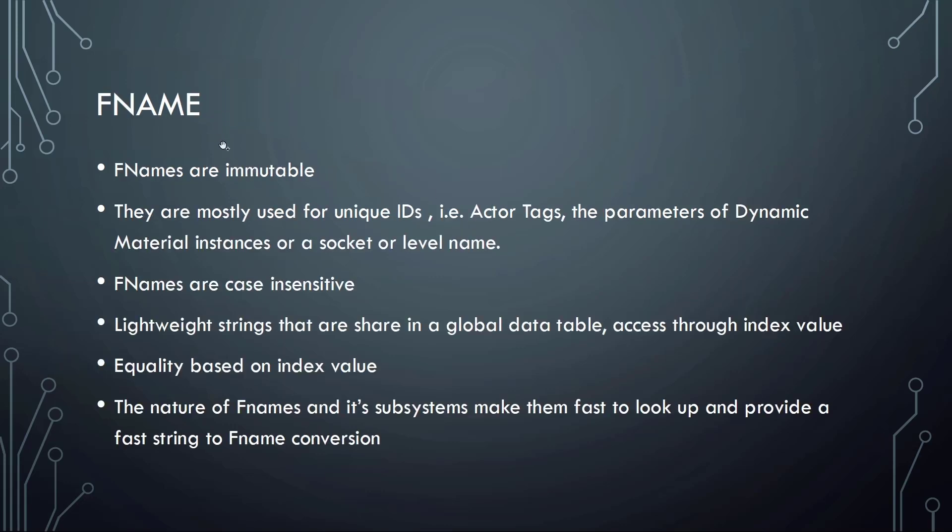Two of the three are immutable. Let's have a look at first FName, which is one of the immutable classes. FNames are mostly used for unique IDs, actor tags for example, or the parameters of dynamic material instances, or like a socket or level name. FNames are case insensitive, meaning if you're writing an FName all uppercase or lowercase, it's the same. So case sensitivity does not matter with FNames.